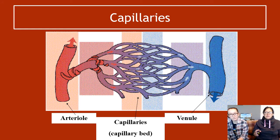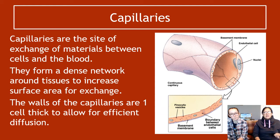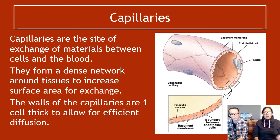Something people get confused about is the position of capillaries. Blood comes from the arteriole — just a name for a tiny artery — at high pressure into the capillary bed, where it slowly loses pressure, then joins back towards the venule. Capillaries are the site of exchange of materials between the cells and the blood. They form dense networks around tissues to increase the surface area for exchange. The walls of the capillary are one cell thick — do not say 'capillaries are one cell thick', it's the walls that are one cell thick — and this allows for efficient diffusion.